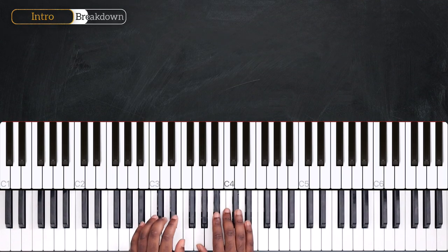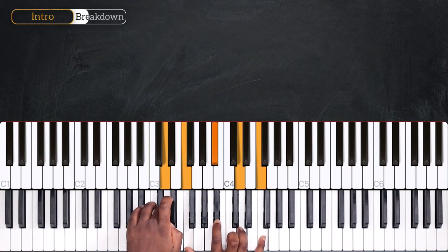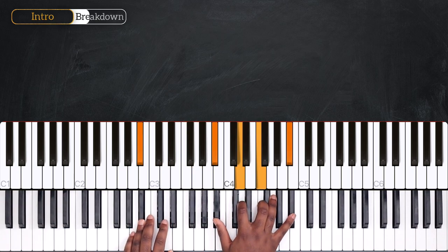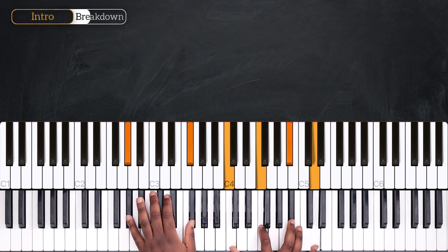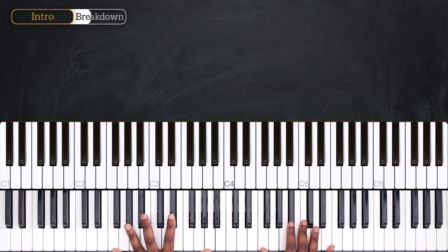From the top, I played Eb, Bb over D, Cm7, Bb, Bb over Ab7, Gb7 augmented, and F7.